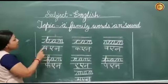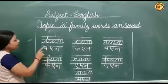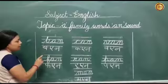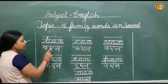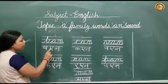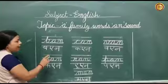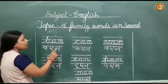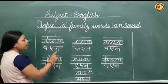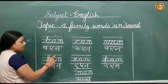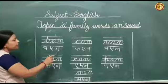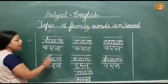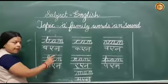This is letter B. The sound of B is 'buh'. This is letter A. The sound of A is 'A'. This is letter N. The sound of N is 'N'. So we can read it like this: buh, A, N — BAN.